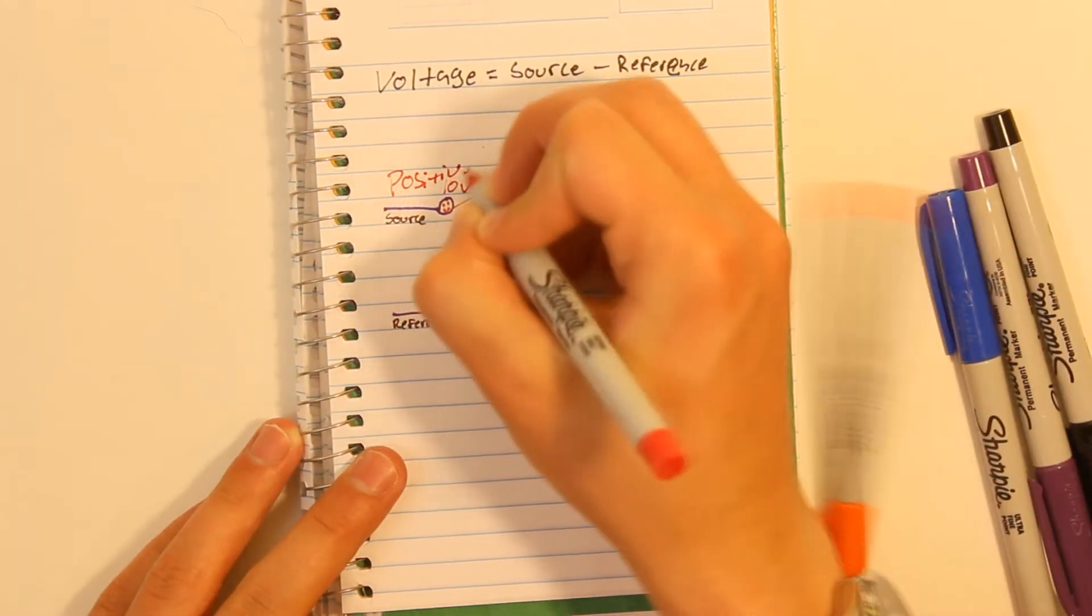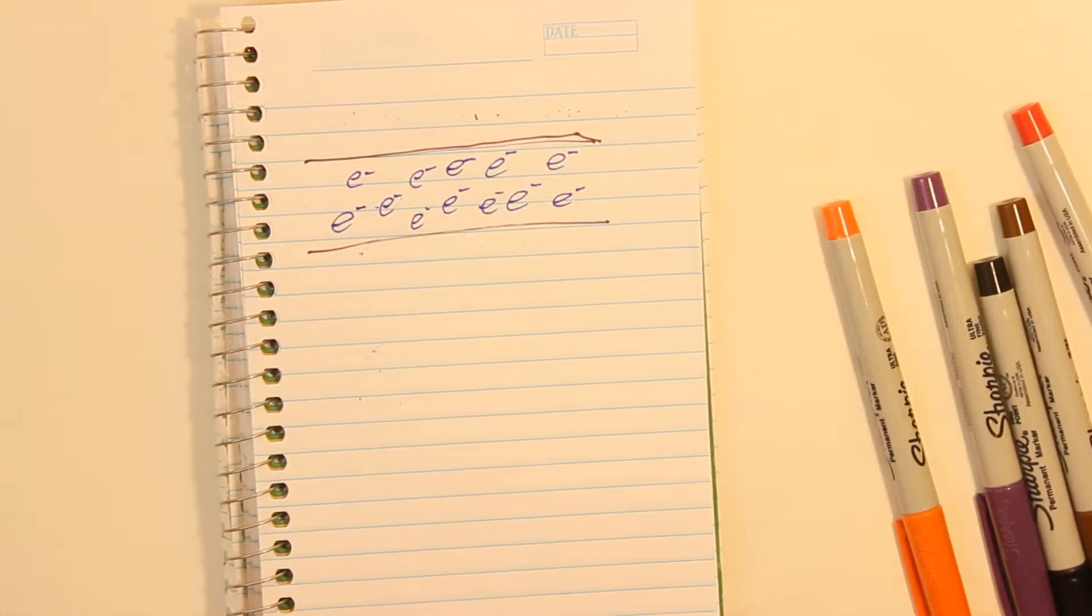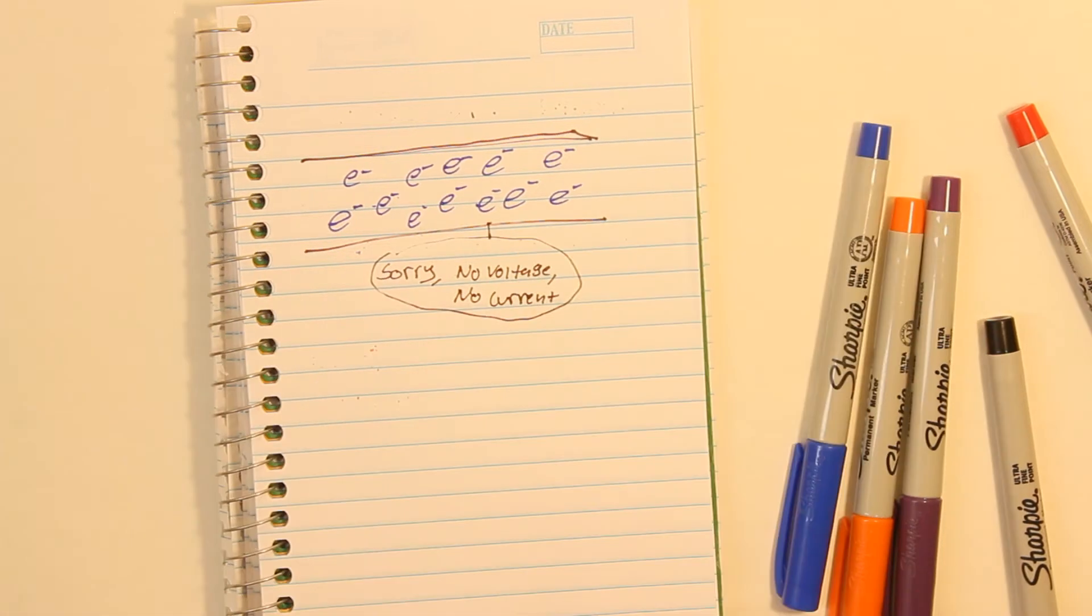If something does not have a difference in electric potential between its positive and ground, then there is no voltage. Without any voltage, there is no current. This is because if there's nothing moving all of these electrons, there is no current actually flowing. No current actually passes through the conductor. It just sits there.